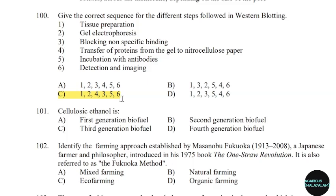101st question: Cellulosic ethanol is classified as. Correct answer: Option B — Second-generation biofuel.